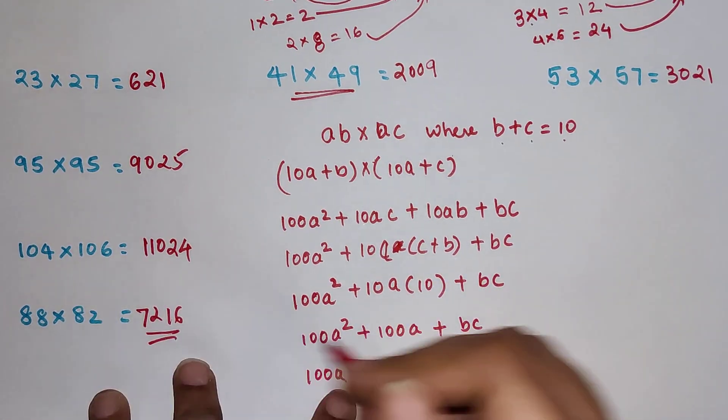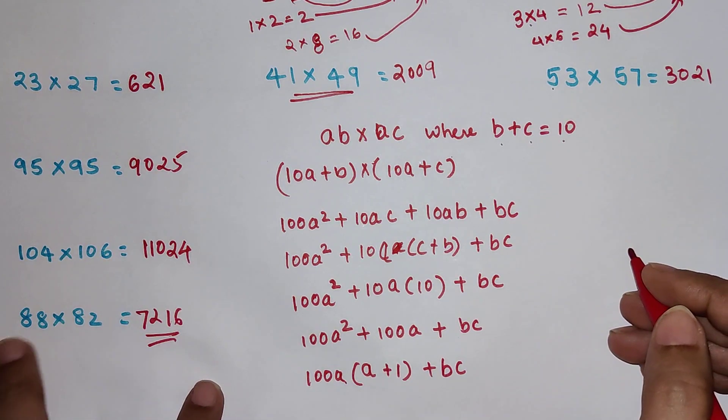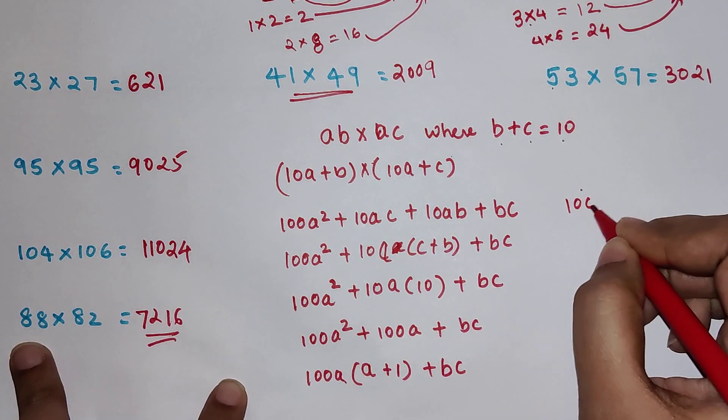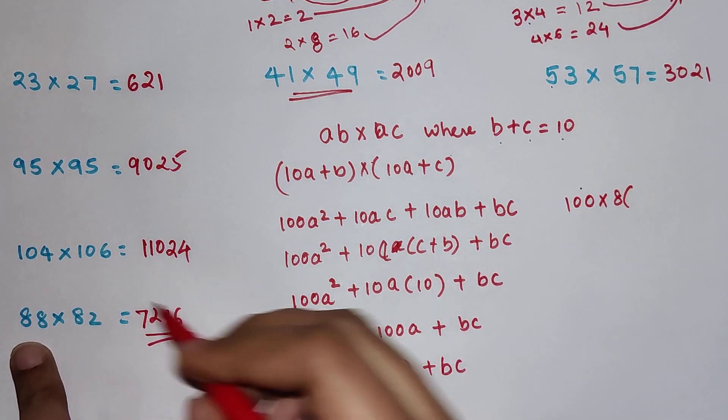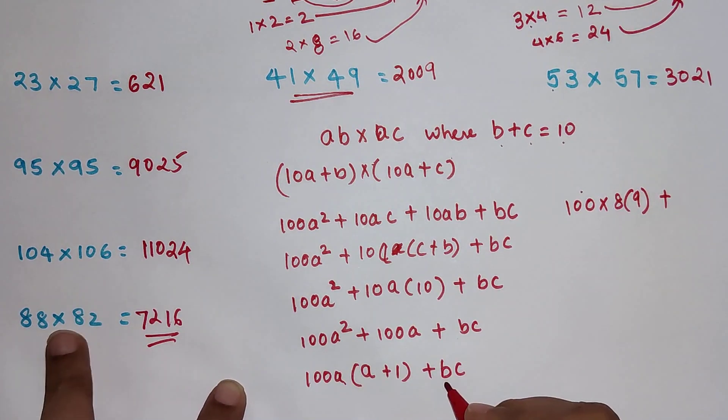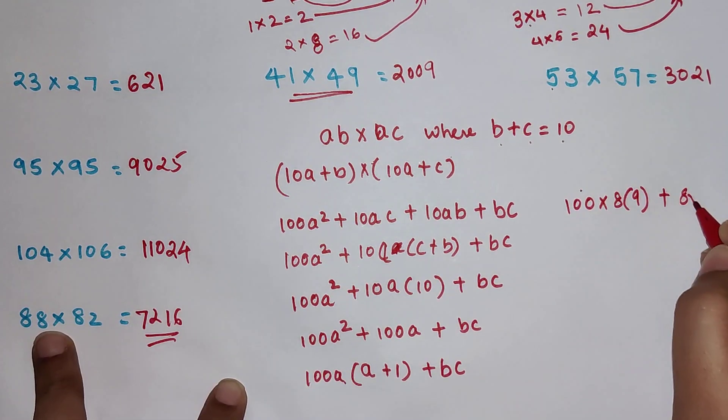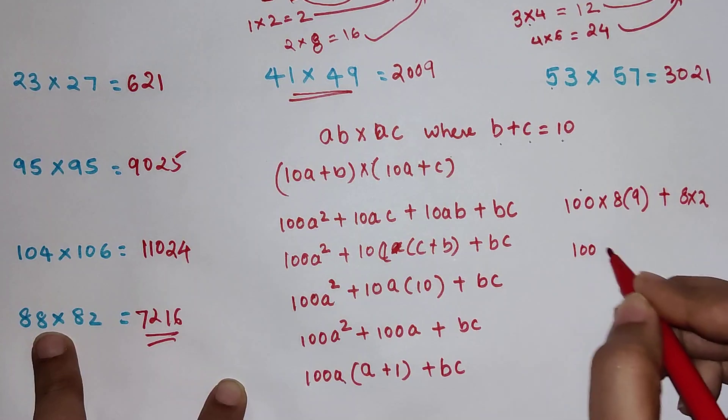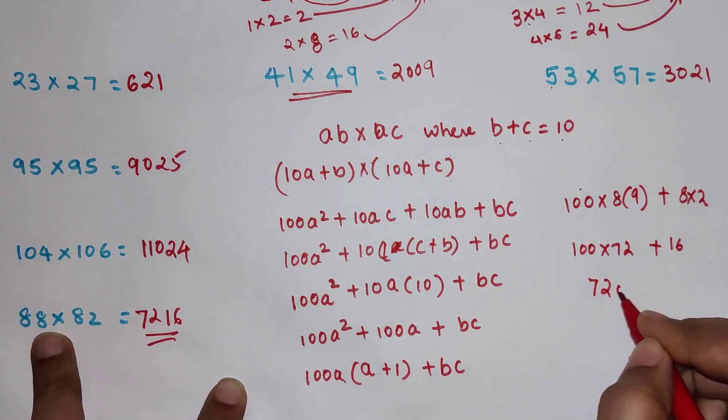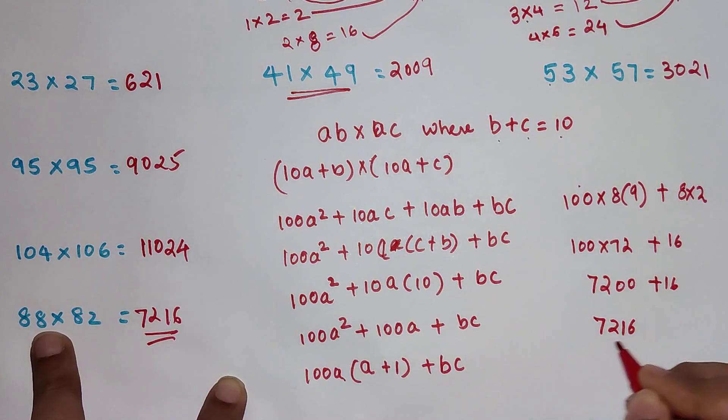If you want we can use one of this method. 88 into 82. So what is your A is 8. So we have 100 into 8 into 8 plus 1 is 9 plus we have BC. So again B is also 8 over here. So 8 into 2. So we have 100 into 72 plus 16. So this is 7200 plus 16. So your final answer is 7216.